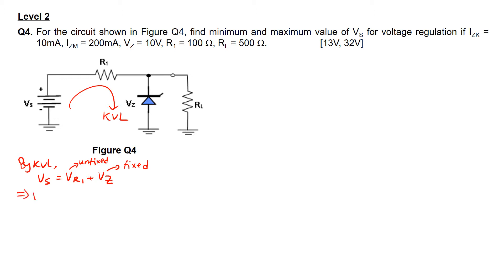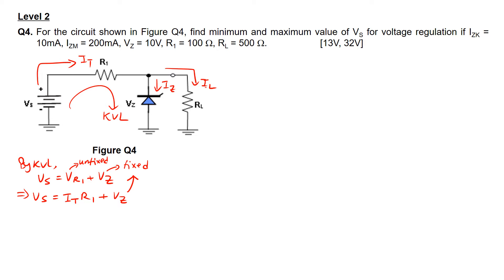We can expand the equation to give Vs equals It times R1 plus Vz, where It is the total current coming out from the voltage source Vs. This total current It splits into two currents, Iz and Il. So Vr1 equals It times R1. Since Vz is fixed and R1 is also a fixed value of 100 ohms, It is the unfixed value here.